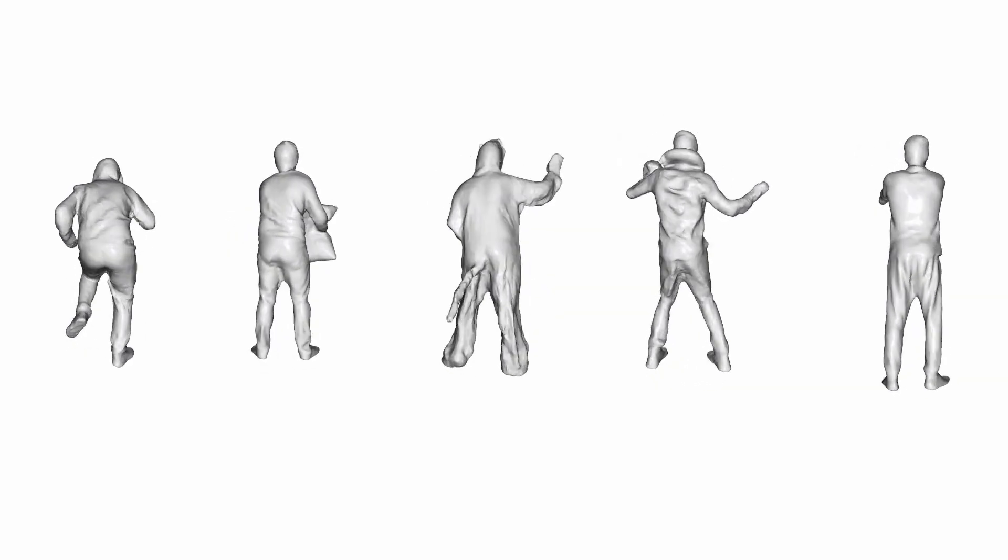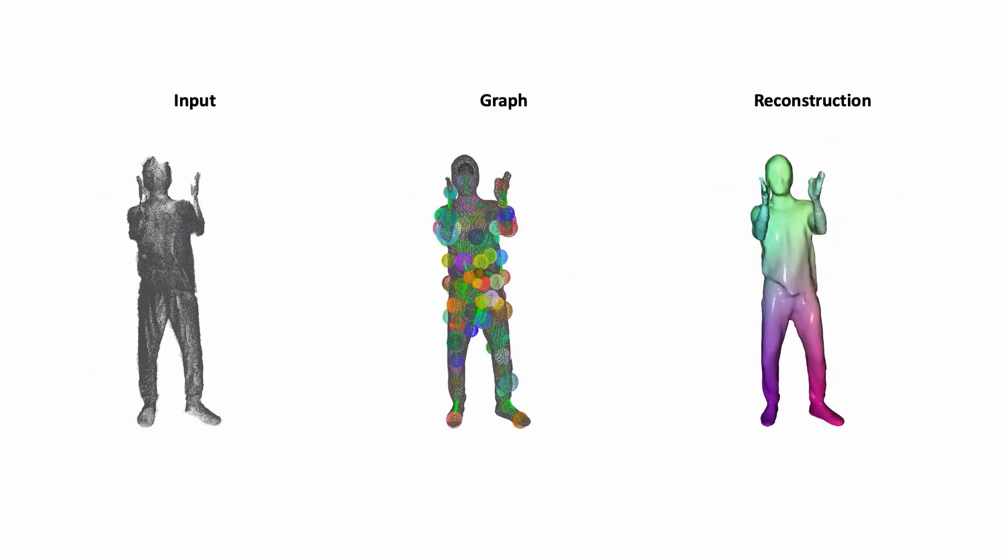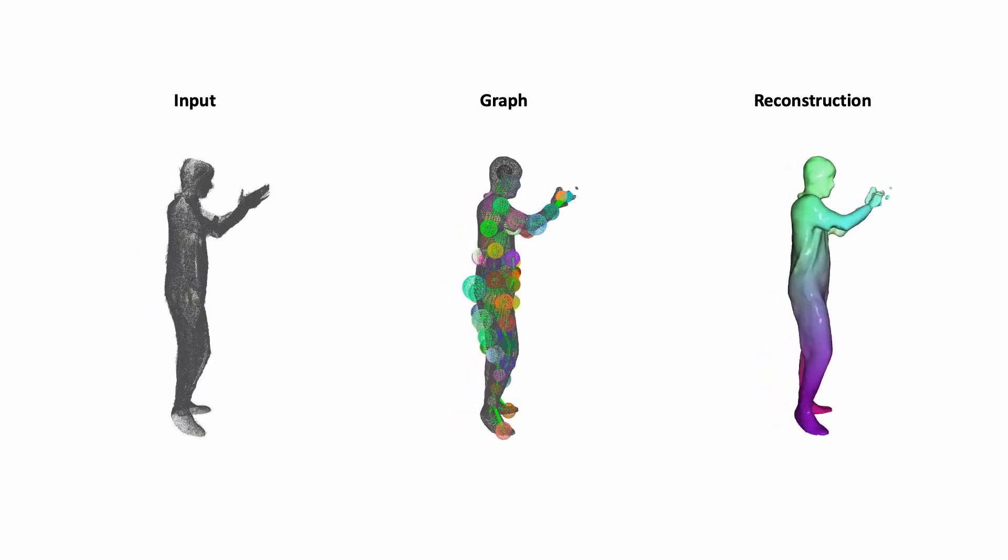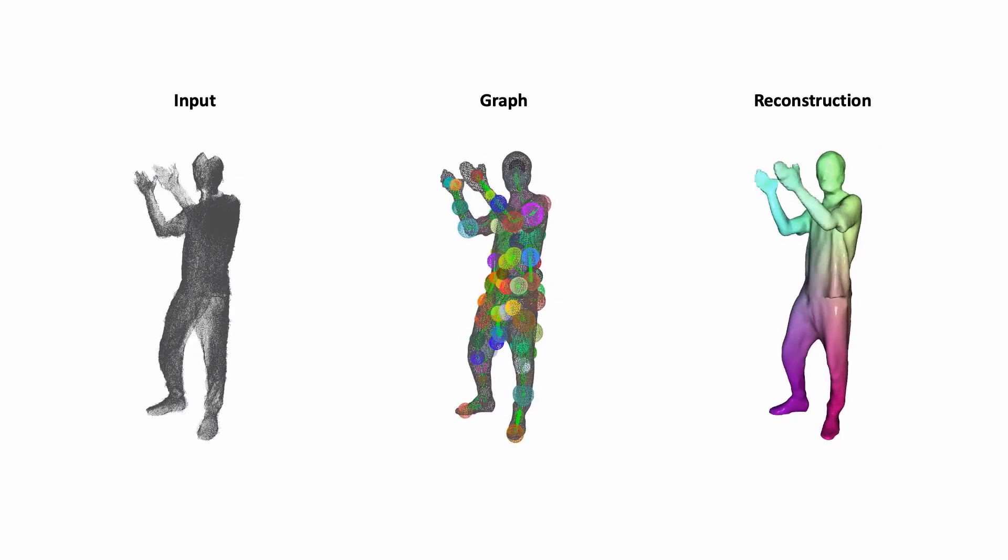In the following, we show results on real data captured with Kinect Azure cameras. We record at the highest resolution setting, which reduces the frame rate to 15 frames per second. Even with this coarse temporal resolution, our method is able to handle fast motions, predicting a consistent graph and a consistent surface.